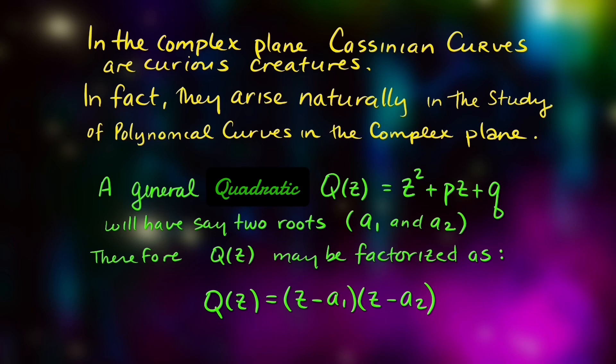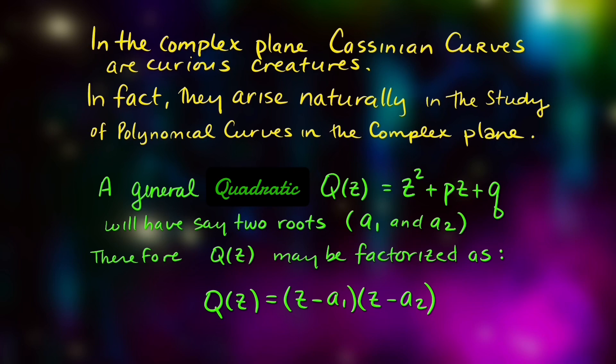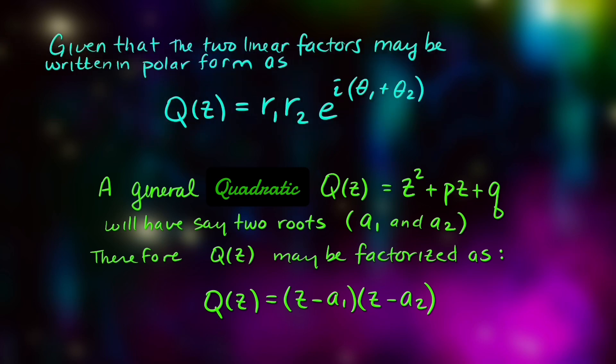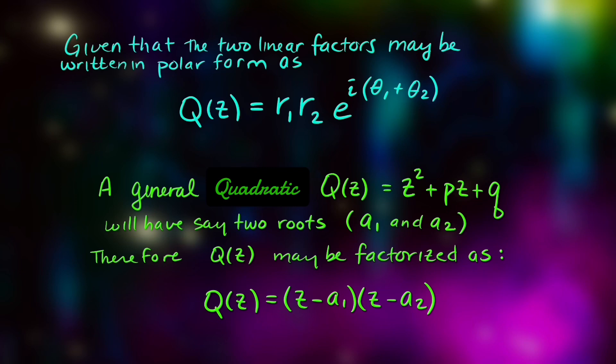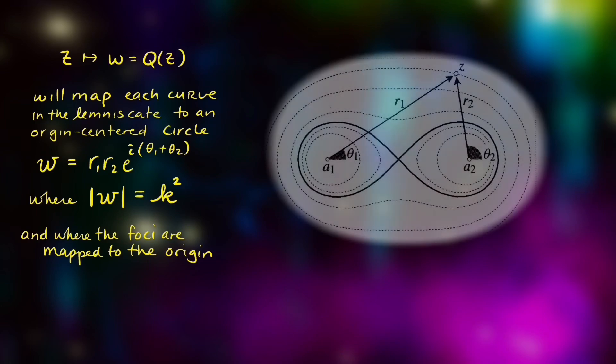Now the fact that we have the factored form of this polynomial in the complex plane means that we can generate a modular form for it. And when we look at this polynomial in polar form, each of those complex numbers given a modulus r_1 and r_2, and an angle theta_1 and theta_2, we can put that together and generate the modular form.